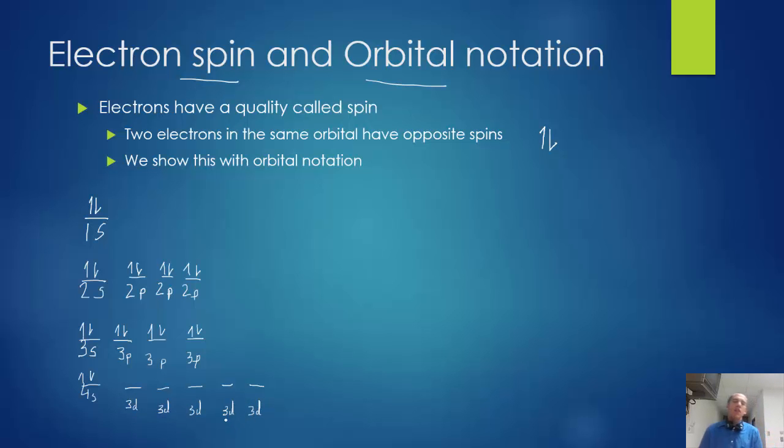Well the d orbitals do a little bit funny things. You're going to get the same thing, electron, electron, electron, electron, electron. And then they start filling in the other way, electron, electron, electron, electron.